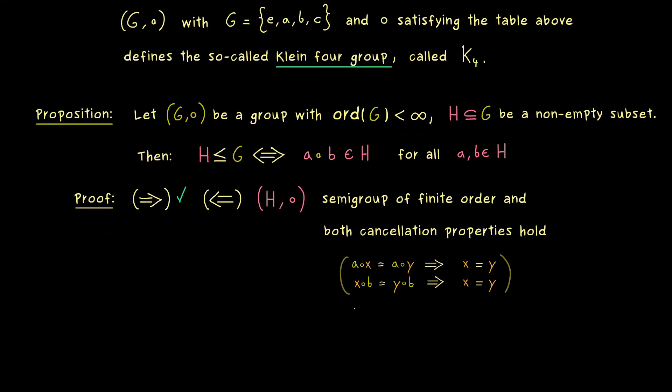Now we can use what we have learned in part 6, namely that the cancellation properties already define a group. But please don't forget, this only works if we have a semi-group of finite order. So part 6 is applicable here and we get that H is a group. With that, the whole proof is finished.